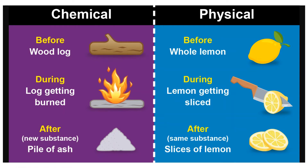Last week we learned the difference between physical and chemical properties. When we can identify a chemical property, we know that a chemical change has taken place. A chemical change produces a new substance with different properties than it had before. We know that a chemical process is when you burn a log — the log gets burned and there's a new substance, a pile of ashes. The chemical makeup of those ashes is different than the chemical makeup of the wood — not only physical, but chemical.